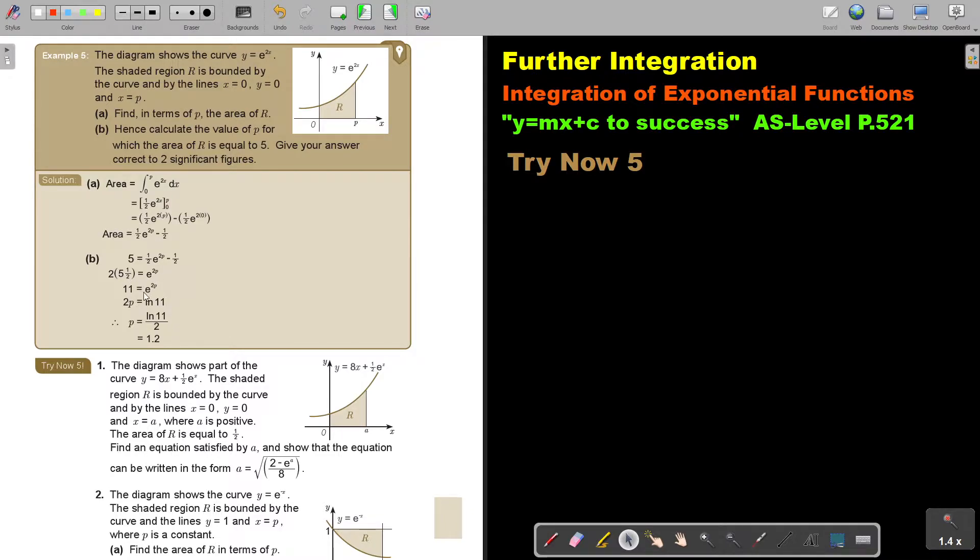And then basically we get 11. And then I go from exponential form to logarithmic form. That's why ln, because of the e. And I swap the sides, and then divide by 2 and I get 1.2.